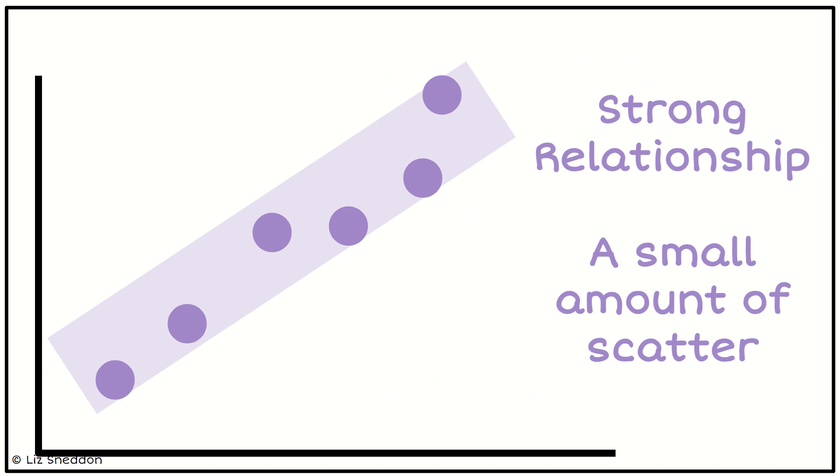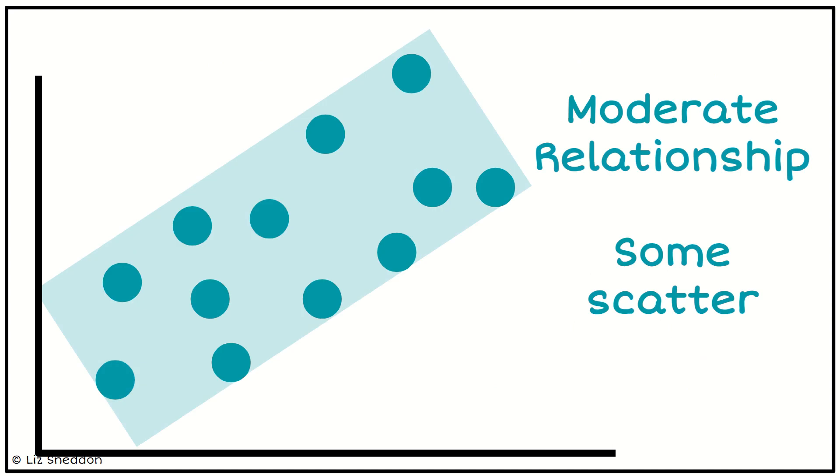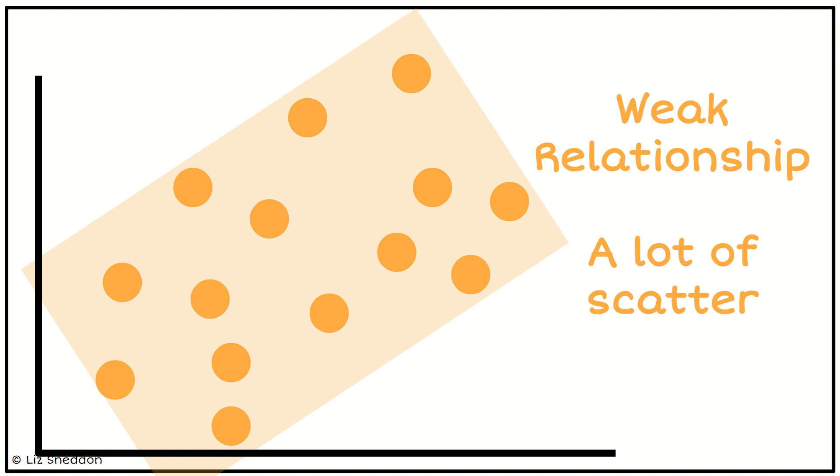When the points are all very close together like this in a nice tight line, so that pattern is quite tight, then that would be a strong relationship. Here the pattern's wider, so we say there's some scatter in that. It's a moderate amount of scatter, so that makes it a moderate relationship. If there's a lot of scatter, that makes it a weak relationship.